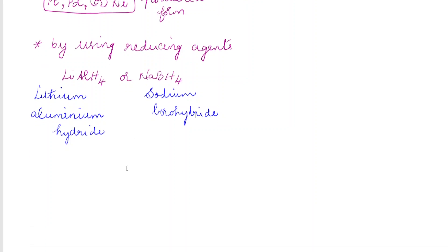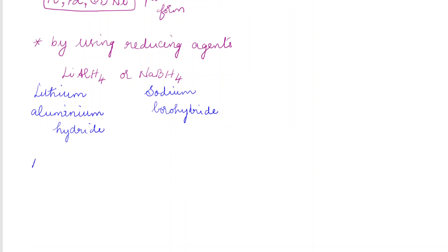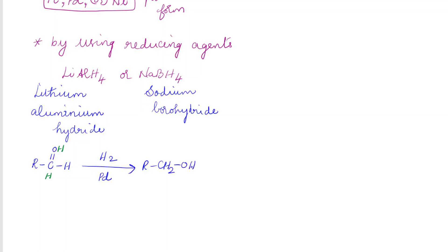Usually, aldehydes are converted to primary alcohols and ketones to secondary alcohols. For the general reaction: R-C(=O)H (an aldehyde), by passing hydrogen in the presence of palladium catalyst, one hydrogen is added to the carbon and one to the oxygen. Since the aldehyde carbon already has one hydrogen, we now get RCH₂OH — a primary alcohol.